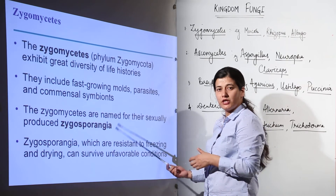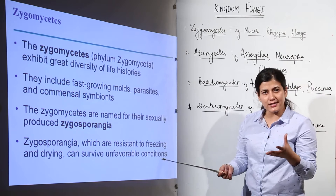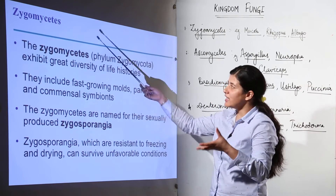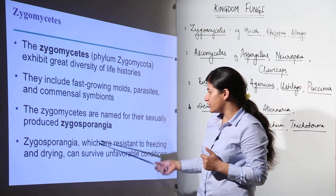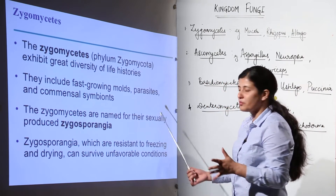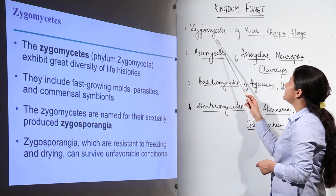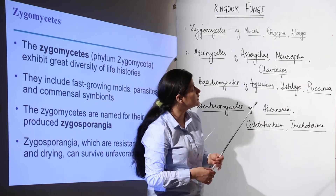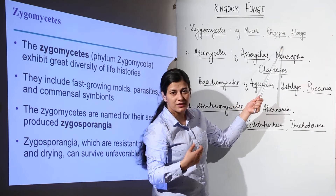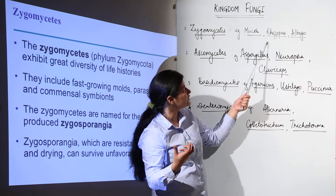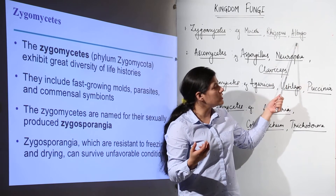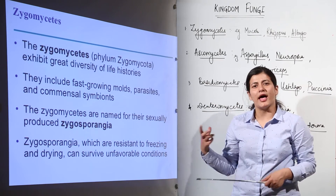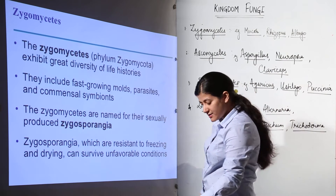Zygomycetes are named for their sexually produced zygosporangia — the zygospore we discussed previously is borne upon a zygosporangium, which is essentially the mycelium. Zygosporangia are resistant to freezing and drying and can survive unfavorable conditions. Examples include Mucor, which is abundant in soil and responsible for rotting of certain materials; Rhizopus, the bread mold; and Albigo, a plant parasite on mustard — Albigo candida — which is a zygomycetic fungi.